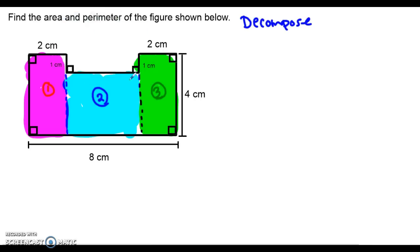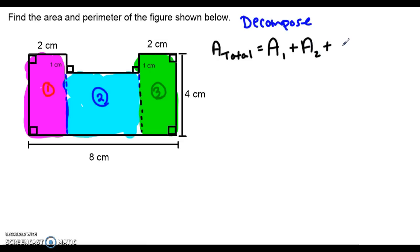So now to find the total area of our figure, all we have to do is find the area of each individual rectangle and then add them up. The total area equals the area of Rectangle 1 plus the area of Rectangle 2 plus the area of Rectangle 3. Since these are all rectangles, I can use either length times width or base times height to find each of their areas. I'm going to use the length times width version of the formula.